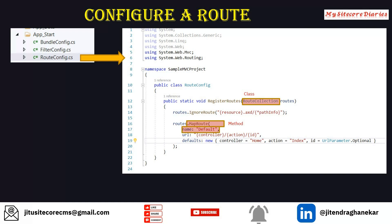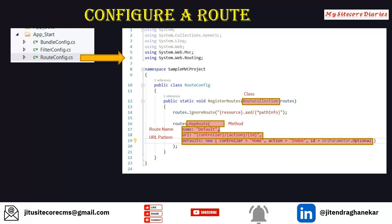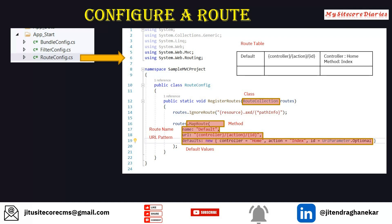MapRoute has two mandatory fields: the name of your route, and the URL pattern. Here you see controller/action/id. So any URL coming with the controller name, slash action name, slash id will be the pattern where it will match the controller and action. The default values are: if no controller action is provided, the default will be the Home controller, the action will be Index, and the id parameter is optional. So these are the default values, and this default route will be stored in the route table.